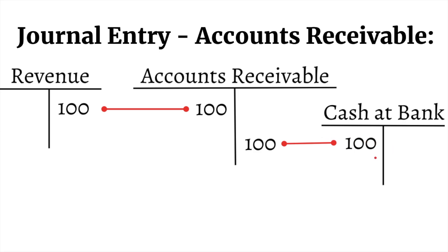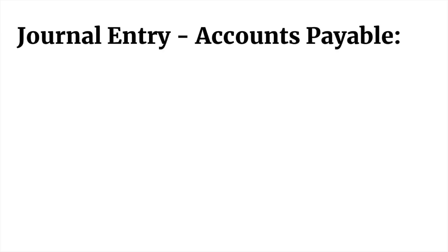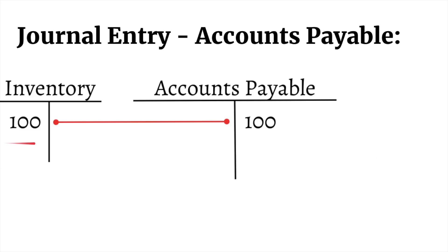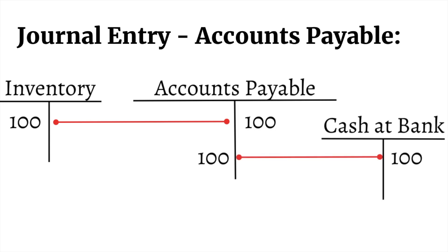We now have that current asset of Cash at Bank. The journal entry for Accounts Payable is quite similar. Inventory is debited because we have inventory coming in — our current assets go up because we receive inventory. However, Accounts Payable is then credited because it's a current liability. We owe $100 because we received the inventory on credit, so we still owe $100 to our suppliers. Then, after 30 days or whatever the credit term is, once we pay them back, we debit Accounts Payable to cancel it out and credit Cash at Bank because Cash at Bank goes down as we pay our liability.